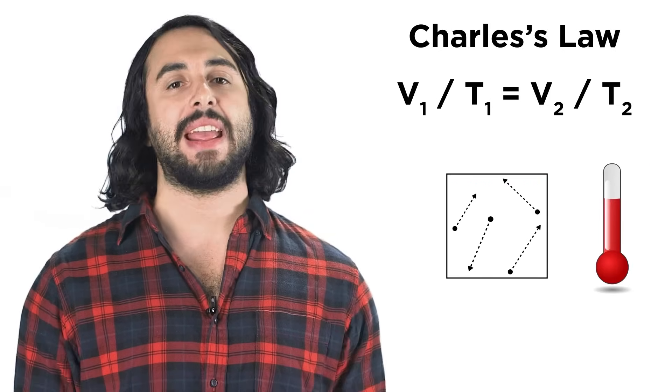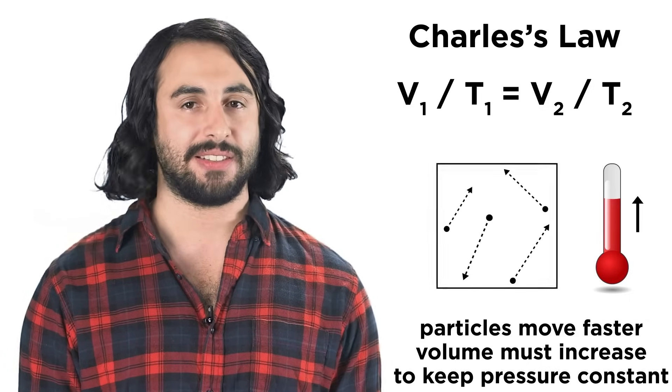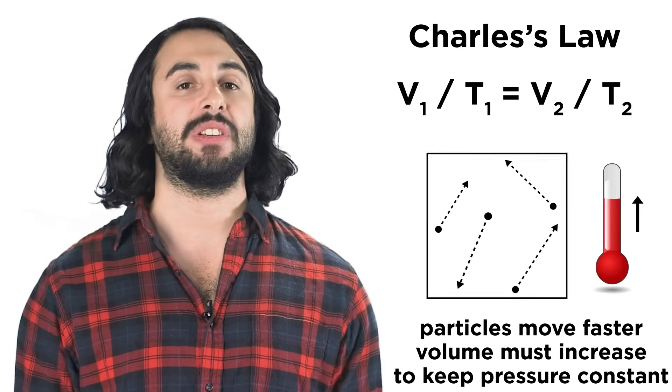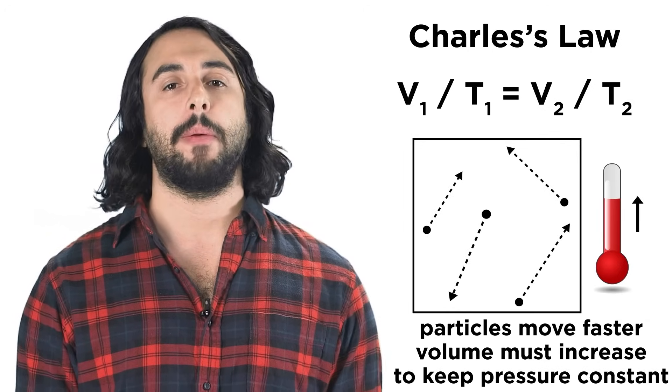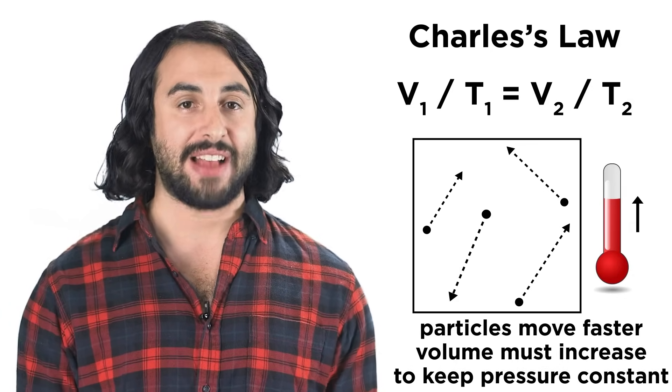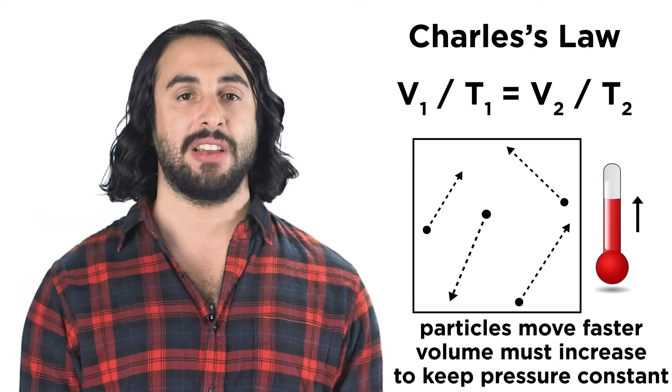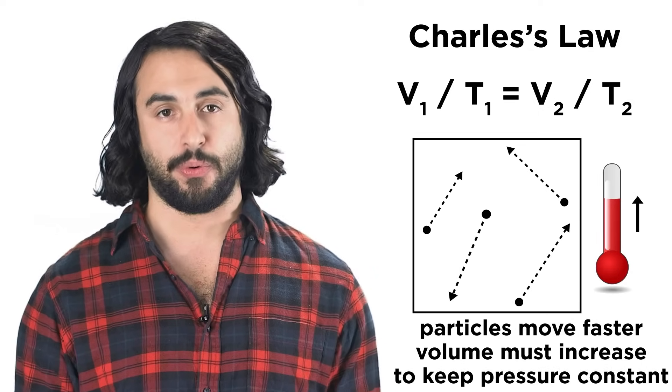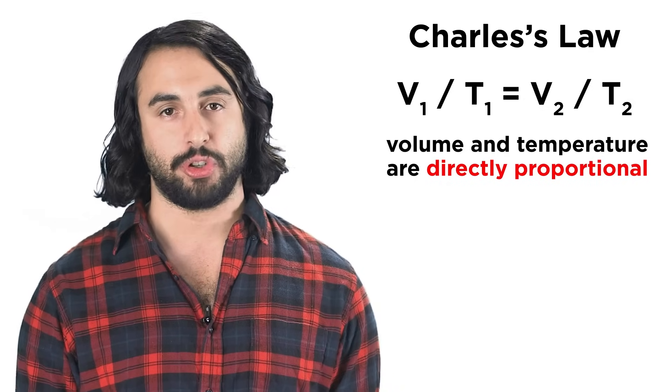For Charles's Law, if we increase the temperature, in order to keep pressure constant, meaning the frequency of collisions stays the same, the volume must expand, because if the particles move faster, but also move farther, they will hit the sides with the same frequency as before. This is why volume and temperature are directly proportional.